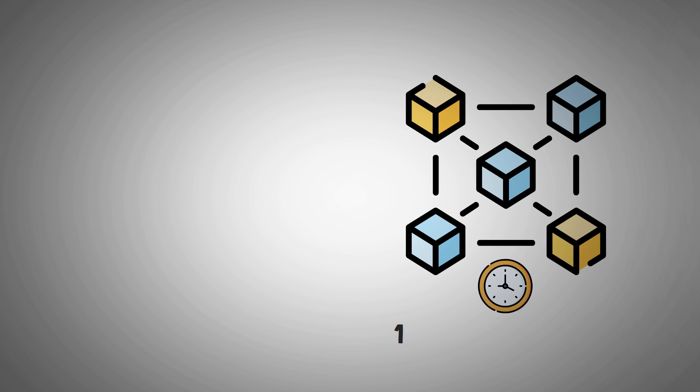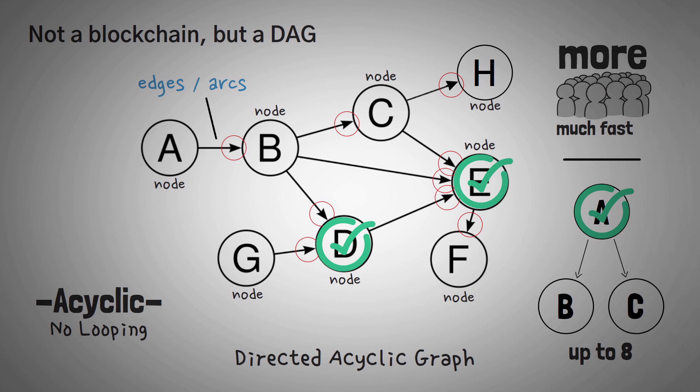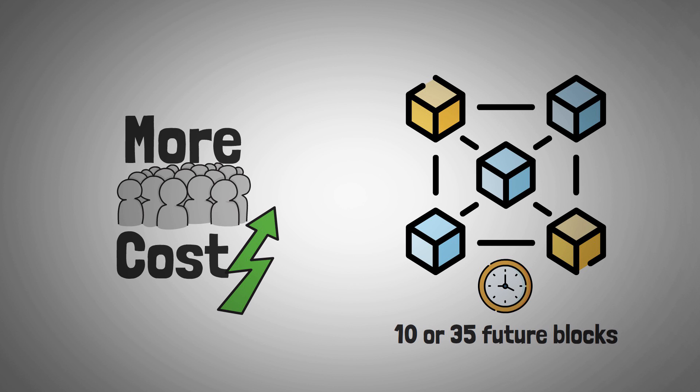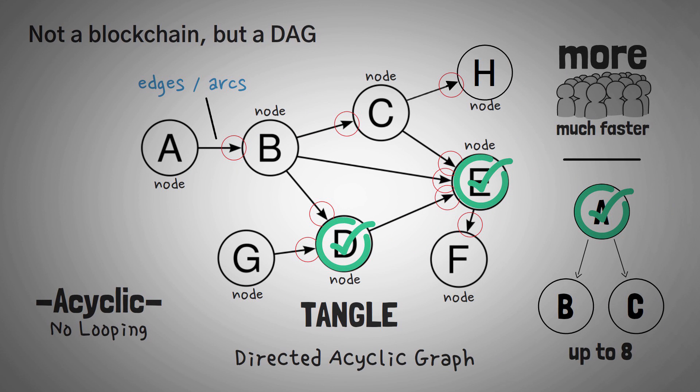In a blockchain, we have to wait sometimes for 10 or 35 future blocks to have a confirmation, but in a DAG, transactions are confirmed when only two other transactions reference them. One interesting thing to share is that the more people that use IOTA, the faster it will get, because you'll have those two nodes pointing to your transaction faster. Now this is unlike a blockchain, where the more people using it will simply make the fees go up. By the way, IOTA's specific DAG setup is what they call the Tangle.